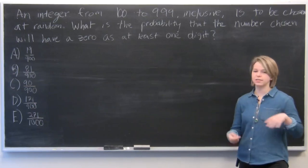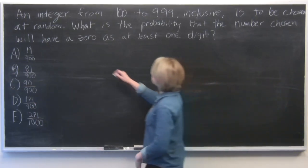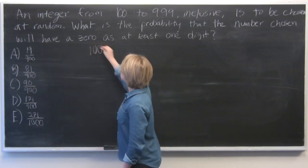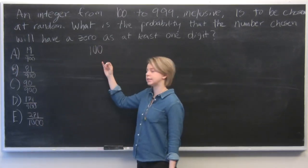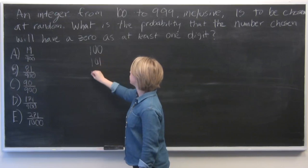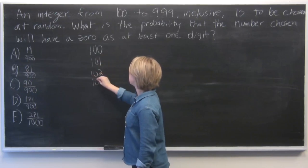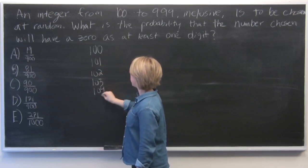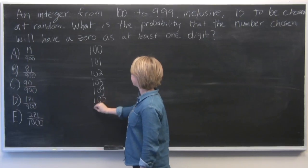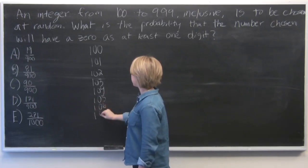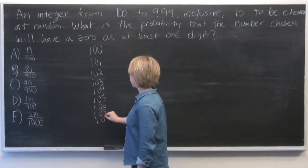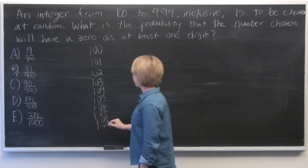So in order to solve this, let's start by making a list. We know that 100 obviously includes a zero, as does 101, 102, 103, 104, 105, 106, 107, 108, and 109.